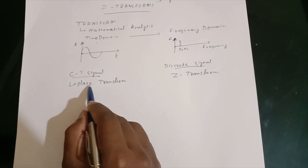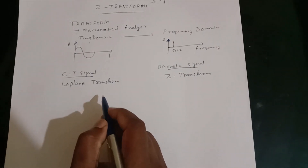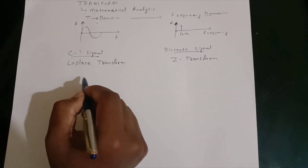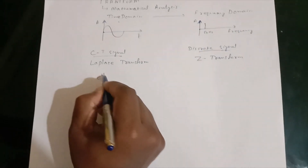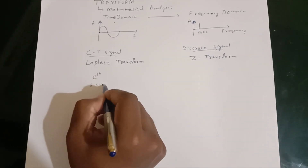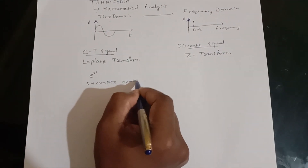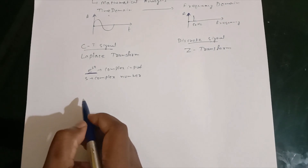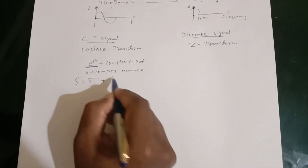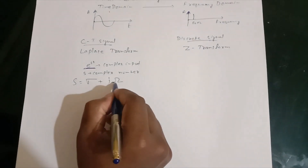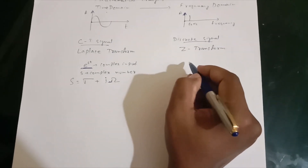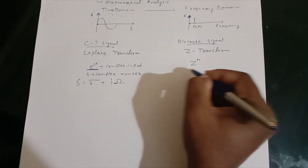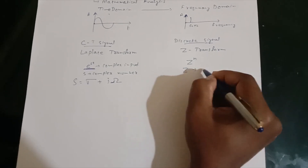There is a similarity between Laplace transform and Z-transform: for both transforms, we use a complex input to the system. For the Laplace transform, we use e raised to st, where s is a complex number, which makes the signal a complex input. Here s represents sigma plus j-omega. In the Z-transform, the input is z raised to n, where z represents a complex number.